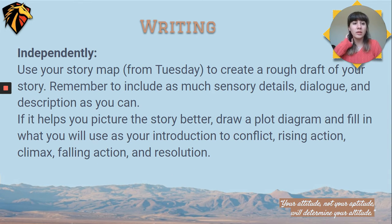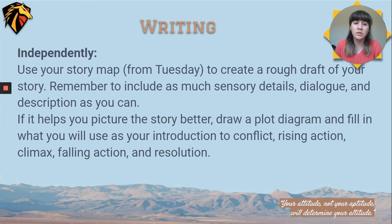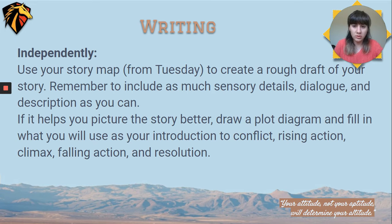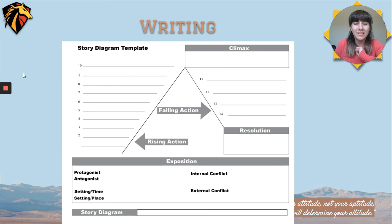Now you want to start writing the rough draft of your narrative about climate change. You're going to use your story map from Tuesday to create a rough draft of your story. Remember to include as much sensory detail, dialogue, and description as you can. If it helps you picture the story better, draw a plot diagram and fill in what you will use as your introduction to the conflict, rising action, climax, falling action, and resolution. If you've forgotten what a plot diagram looks like, you can copy this from your slides. The numbers go 1 to 10 — that's the order that everything happens in.